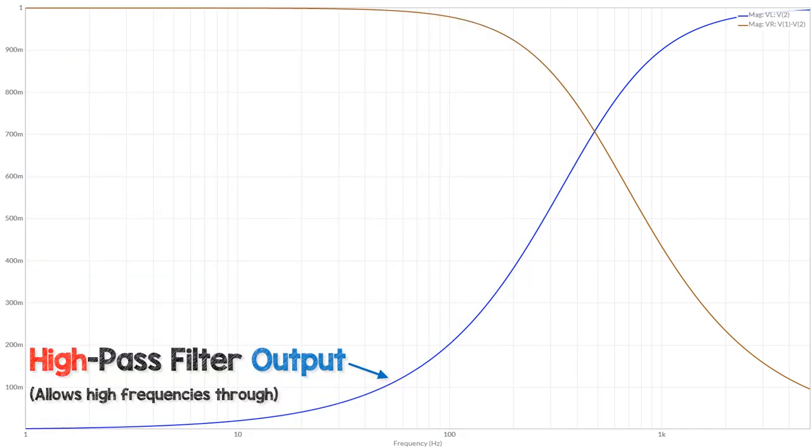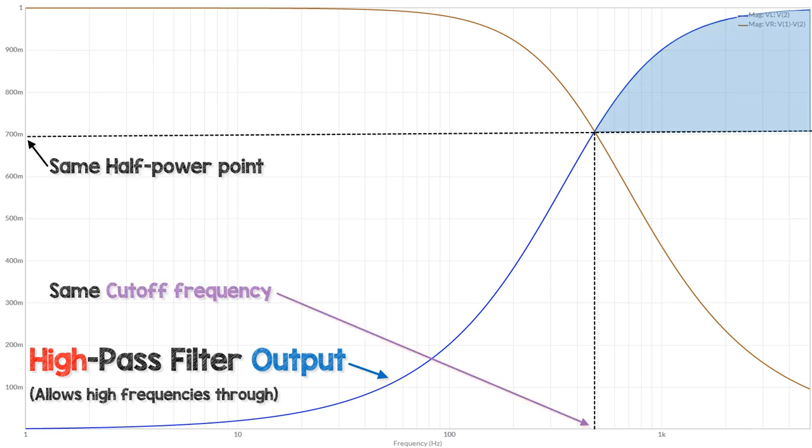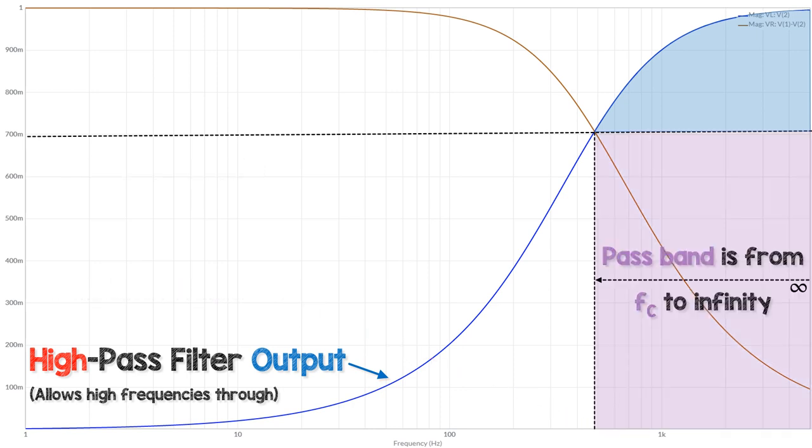A high pass filter allows frequencies above the cutoff frequency through and the same components give the same cutoff in a low pass and a high pass filter. The pass band starts at the cutoff frequency.